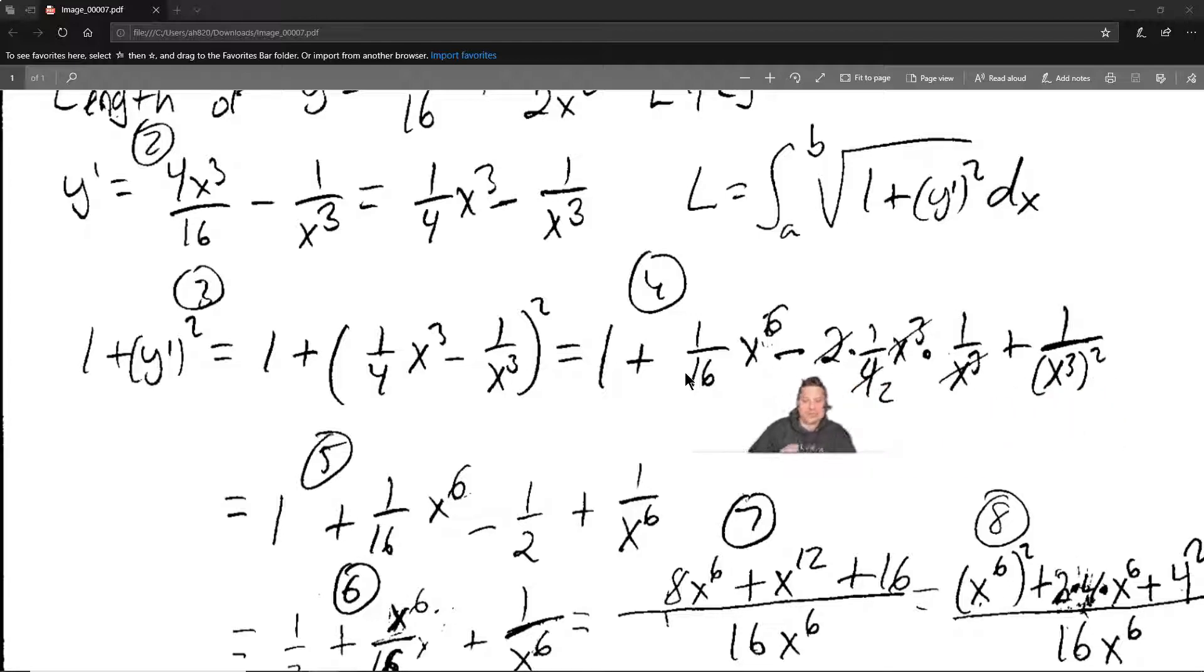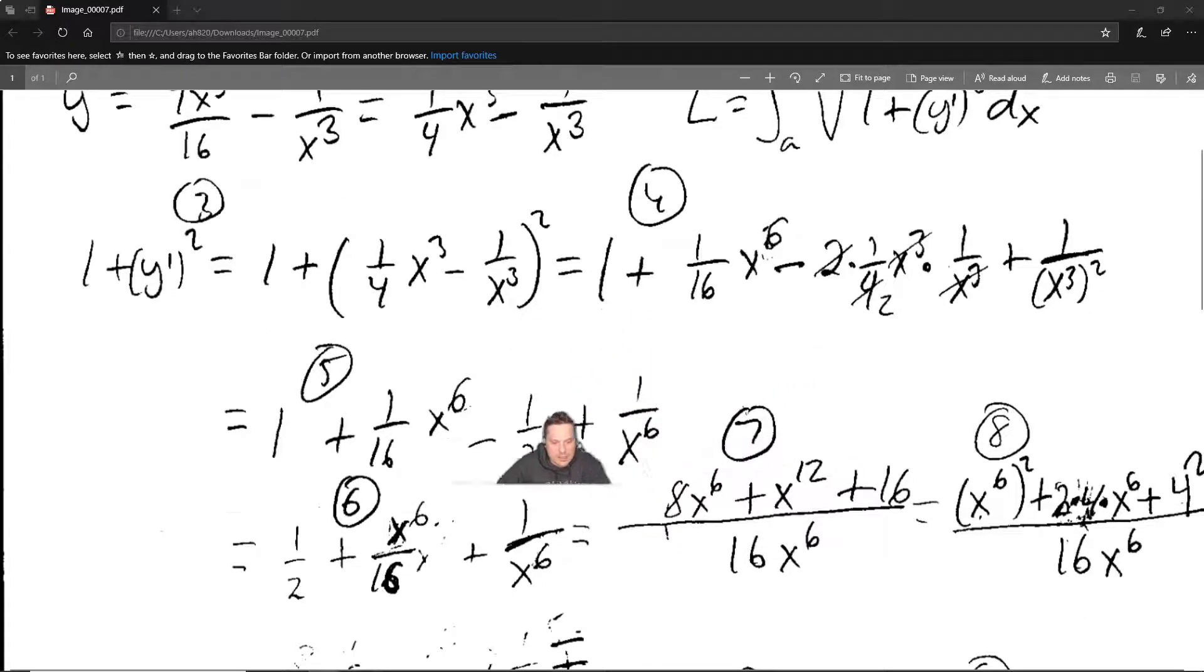Now at this point, there's some flexibility in the way you choose to proceed here. So a way to proceed is as follows. At step 5, you're going to copy the 1. That 1 is coming from above my head. Then it's going to be plus 1/16 x to the 6th minus 1 half. That 1 half negative in the middle. That's back at step 4, right? When the x cubed and x cubed cancel, then you have 2/4 that reduces to negative 1/2 in that position. And at the end, you have 1 over x to the 6th.